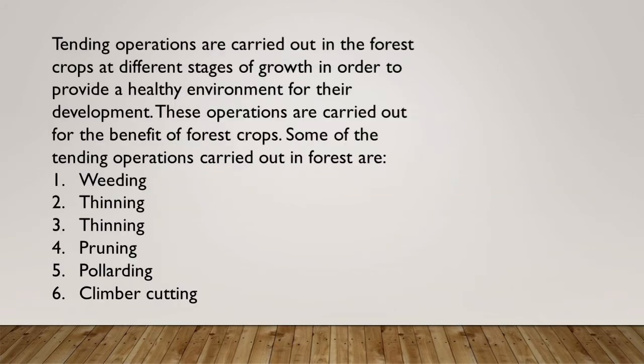Tending operations are carried out in forest crops at different stages of growth in order to provide a healthy environment for their development. Not only on forest crops, these operations are carried out on competing vegetation too. They are done to provide growing space for trees and are carried out for the benefit of forest crops. Some of the tending operations carried out in forestry are weeding, thinning, pruning, pollarding, and climber cutting. All these operations are collectively known as tending operations, also known as cultural operations, carried out for the benefit of forest plantation at any stage of their life cycle.